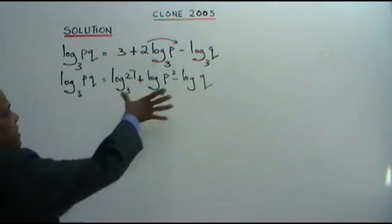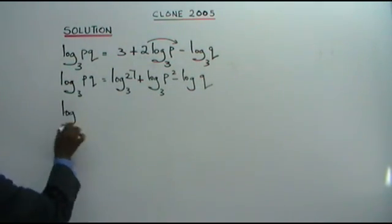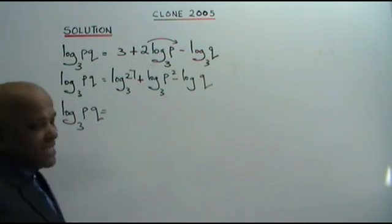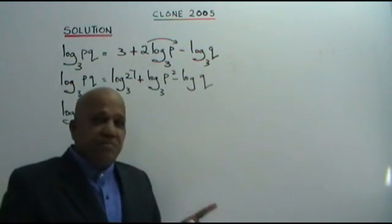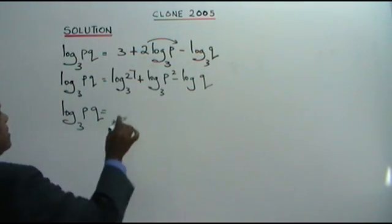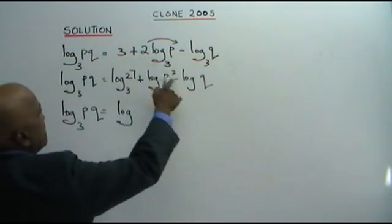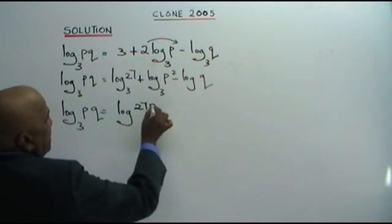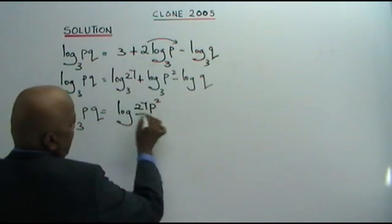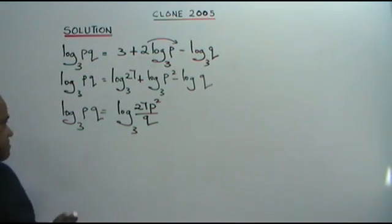Now we're going to combine all these into a single log. You must not be lazy to write all the steps — it is important in mathematics. So log PQ, base 3, is equal to log of 27P squared over Q, base 3.